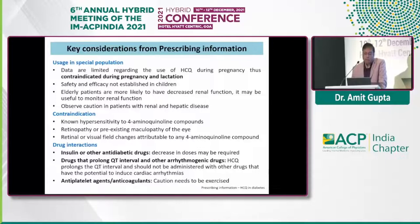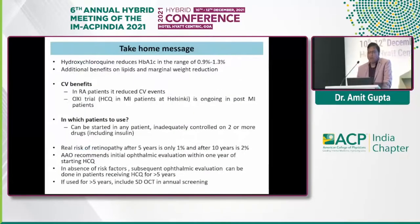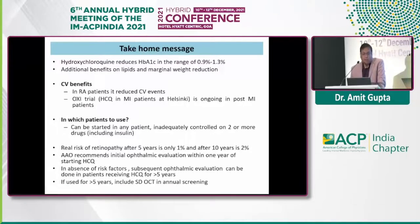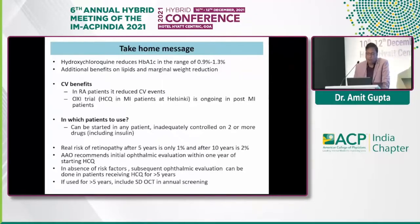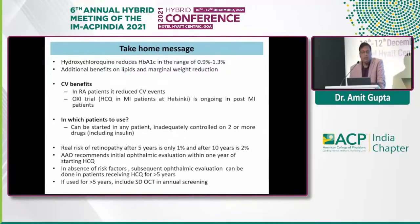The take-home message: HCQ reduces HbA1c in the range of 0.9 to 1.3 percent. Additional benefits include lipid improvement, marginal weight reduction — so no weight gain — and CV benefit seen in RA patients in terms of reduced CV events. OXTRIAL is ongoing in post-MI patients. HCQ can be started as add-on to two or more drugs. Real risk of retinopathy after five years is only 1 percent and after 10 years is only 2 percent.